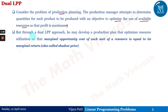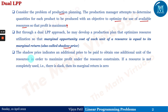Through a dual LPP approach, the manager may develop a production plan that optimizes resource utilization so that the marginal opportunity cost of each unit of resource is equal to its marginal return — also called the shadow price. This is a very important concept known as shadow price in the context of duality. The shadow price indicates an additional price to be paid to obtain one additional unit of a resource in order to maximize profit under the resource constraints.